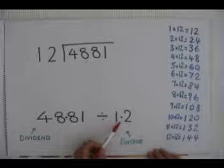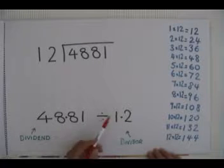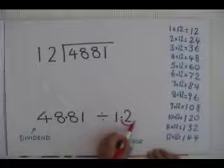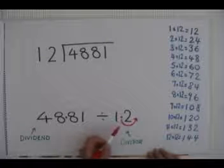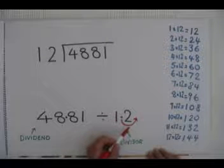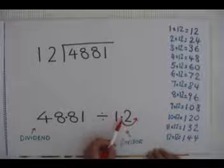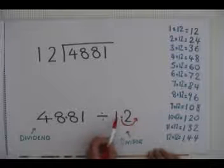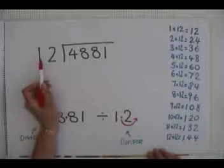To make the divisor a whole number in this case, we need to move the decimal point along one space, or times the number by 10. If we move this decimal point along one space, the divisor becomes a whole number of 12.